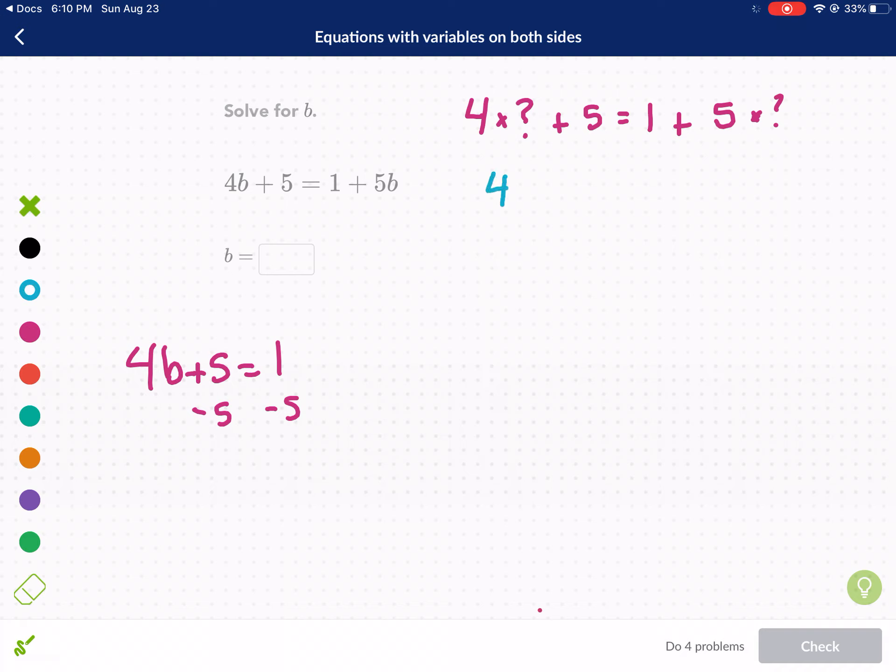So if we have 4b plus 5 equals 1 plus 5b, besides moving the 5, which you already talked about, we could also move the 4b. Now, how do we do that? How do you move a 4b?